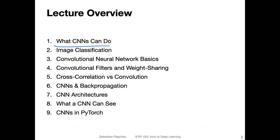First, I want to talk briefly about applications of CNNs — what we can do with them. Then we will talk about image classification in particular, because image classification is one popular application area of CNNs, and it helps us study CNNs better when we use a simple application first. Then I will go over the basics of convolutional networks, focusing on convolutional filters and weight sharing, which is one key aspect of the convolutional architecture.